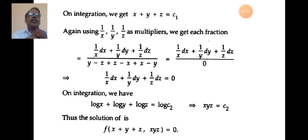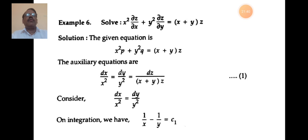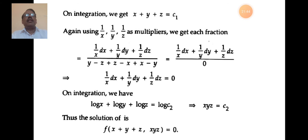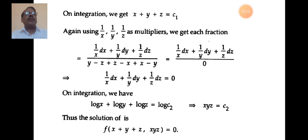Therefore the general solution of the given differential equation is φ(x + y + z, xyz) = 0. In this way we can find the solution of a first order linear partial differential equation: compare with the standard equation Pp + Qq = R, write the auxiliary equation, then apply grouping or multipliers to find two solutions u and v, and write φ(u, v) = 0. Thank you.